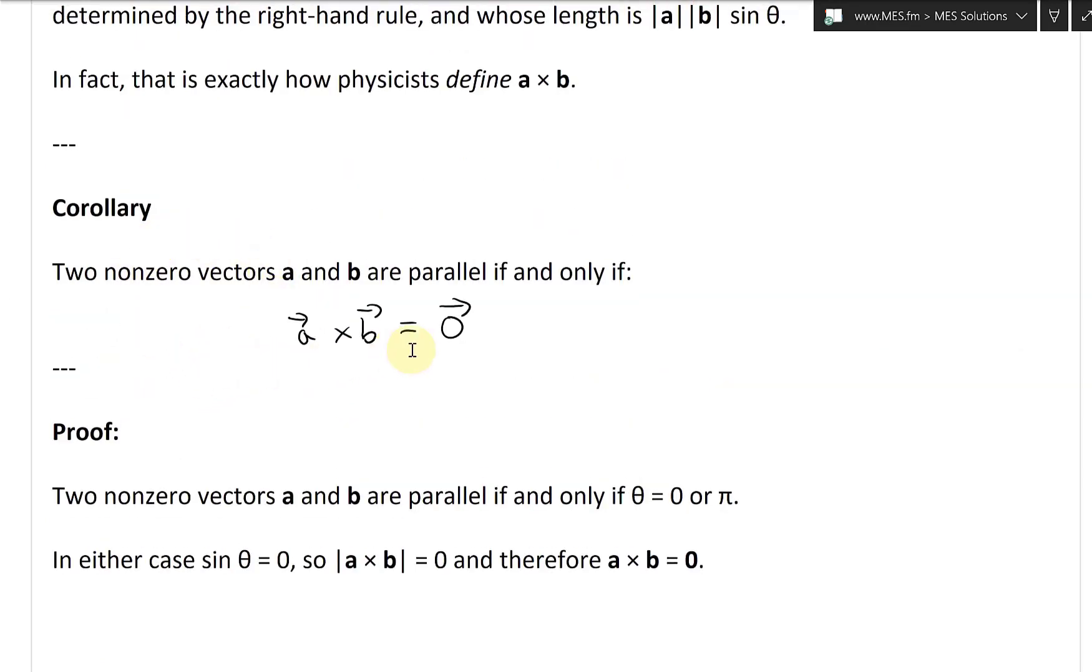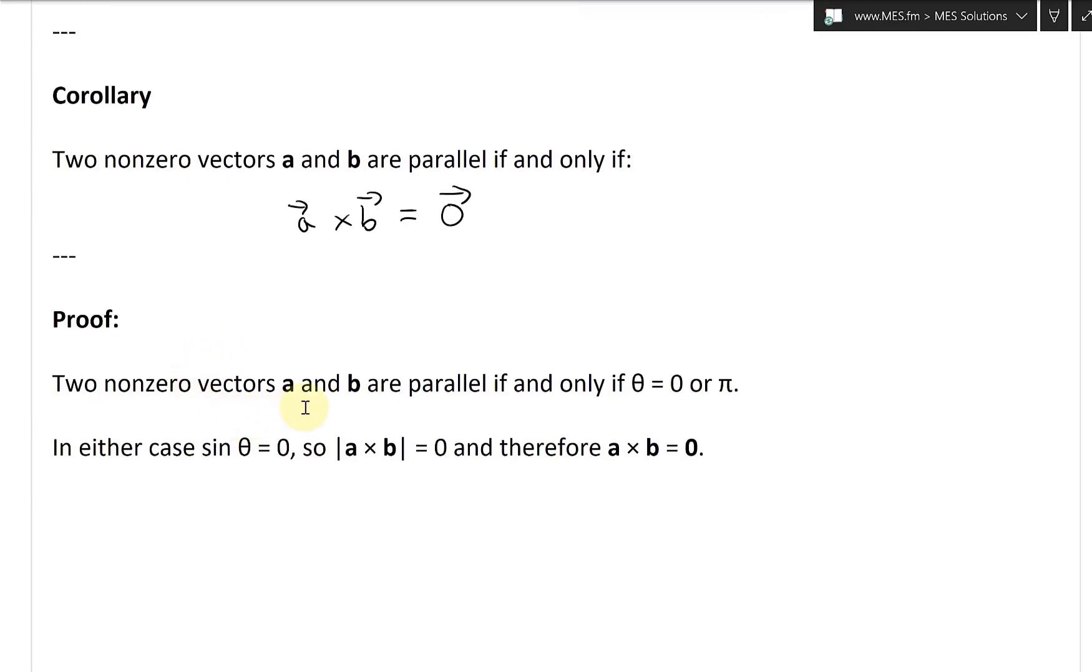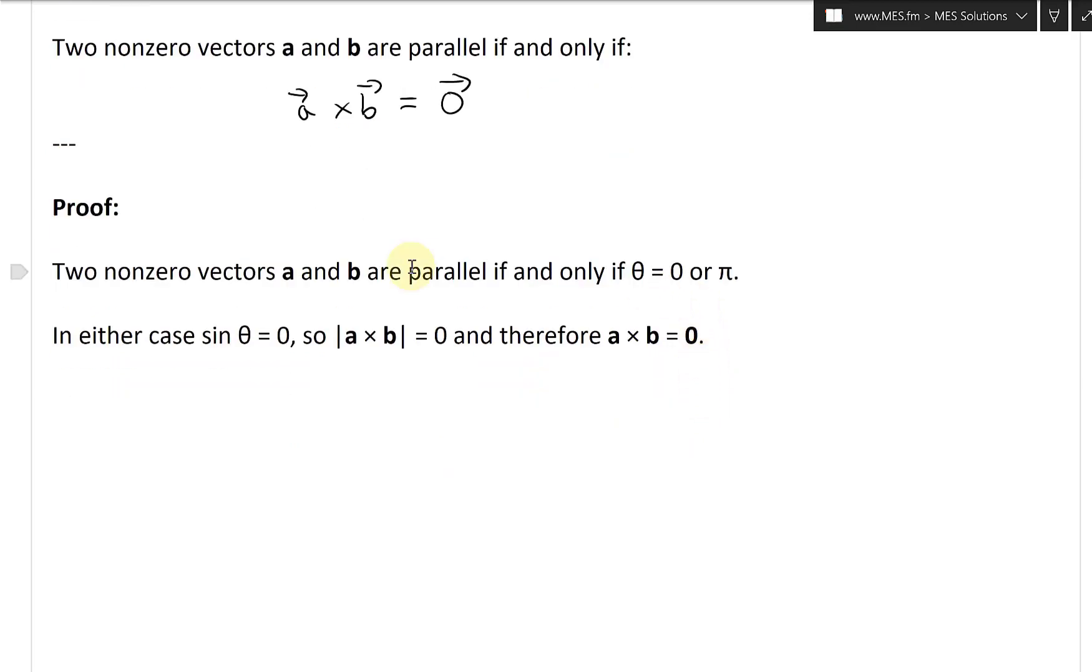And yeah, here we'll look at the proof of this. Two non-zero vectors A and B are parallel if and only if θ equals zero or π radians or 180 degrees. In either case, sine θ equals zero, so A cross B equals zero.